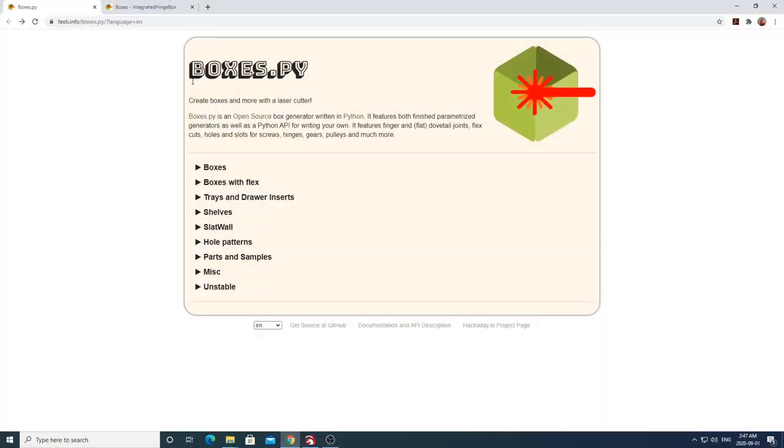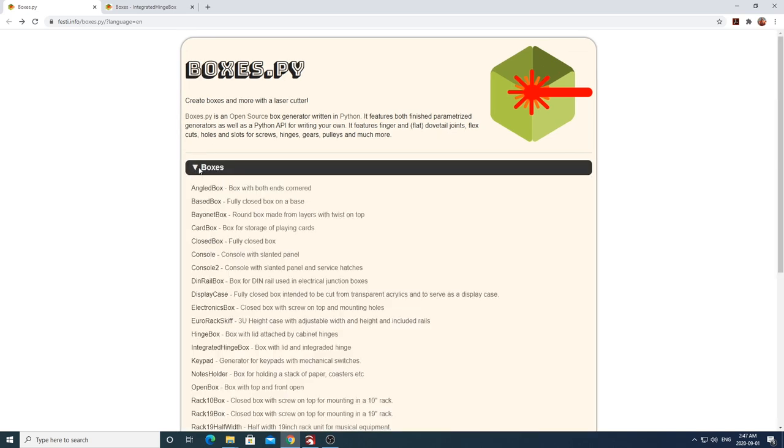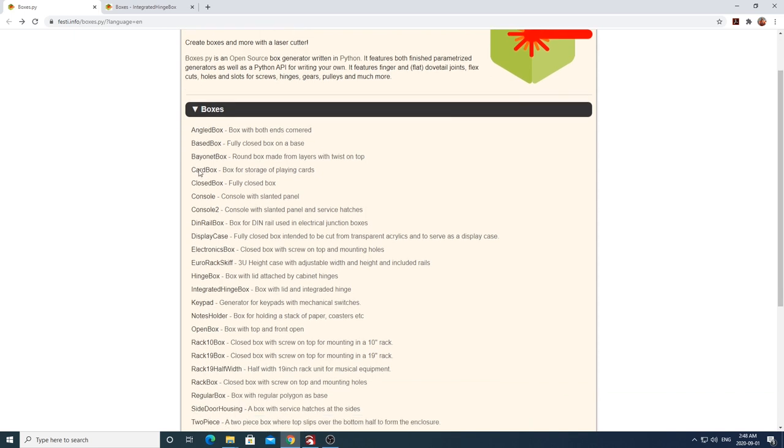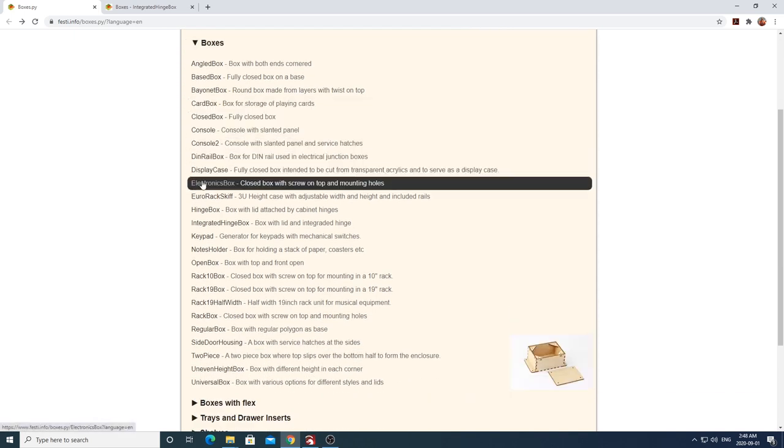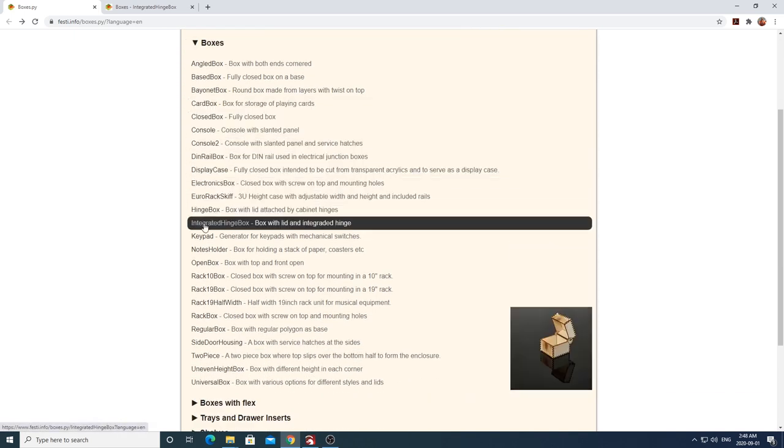The first thing you're going to want to do is head on over to boxes.py. This site lets you generate files for all different types and sorts of boxes that are meant to be cut on a laser engraver. For our box today you're going to want to open up the box tab, scroll down to integrated hinge box and click on that.